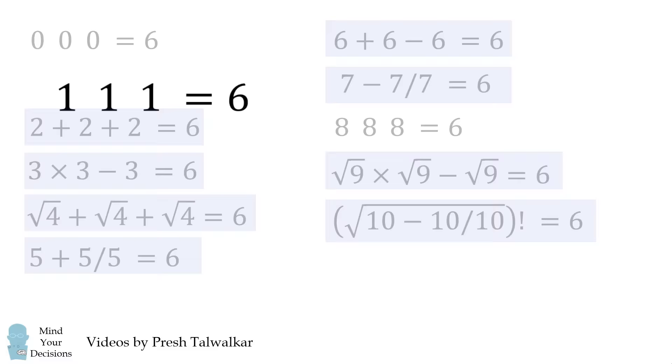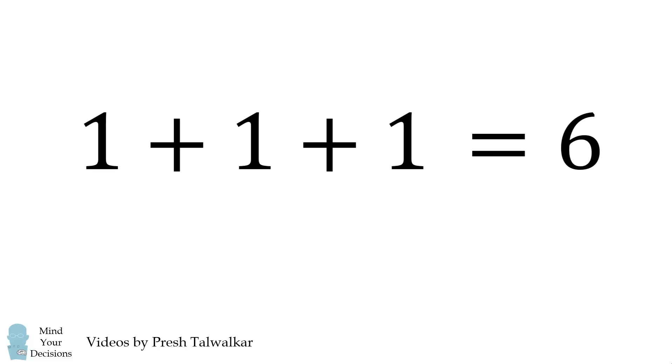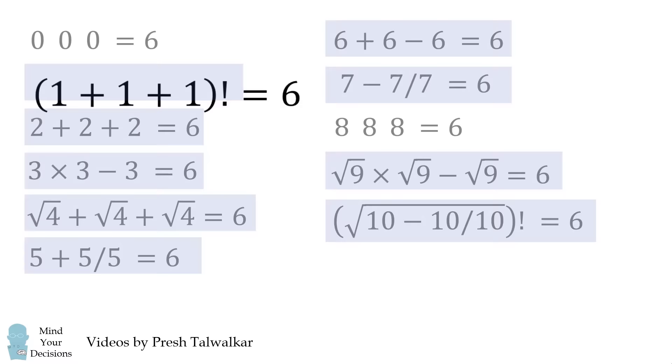Now, what about 1 1 1? Well, notice if we add the three numbers, we get to 3. And then, we'll take the factorial and that's equal to 6.